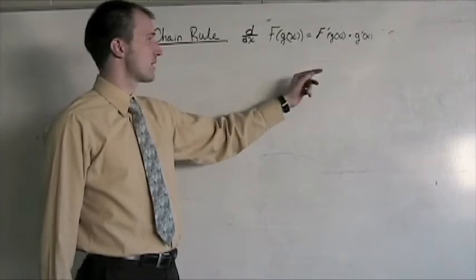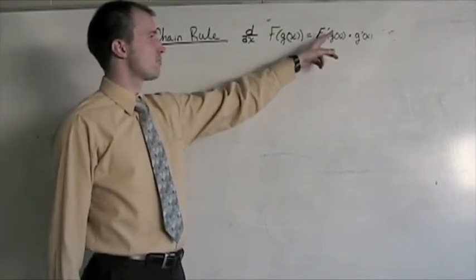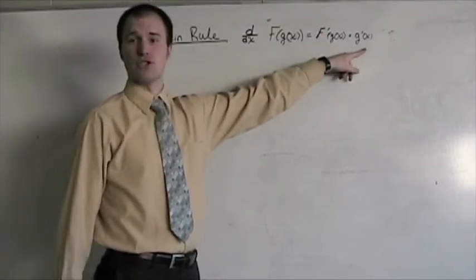So, f of g of x is equal to f prime of g of x times g prime of x.